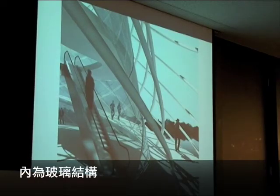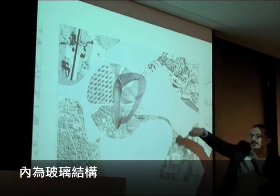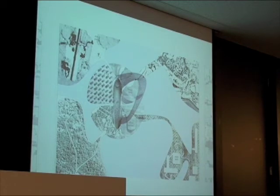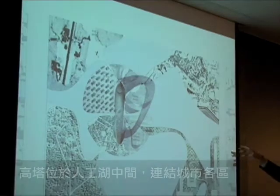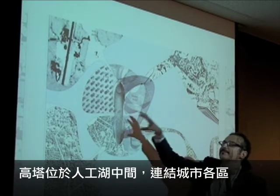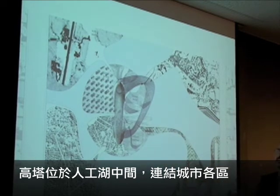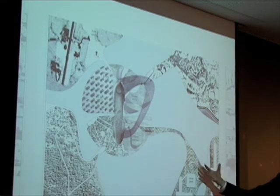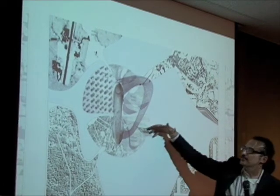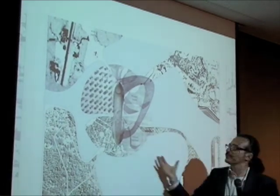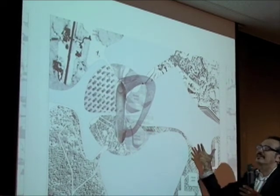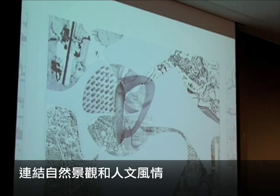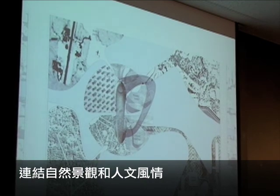We have glass inside and you can walk all around the building, so you have different sensations — you are completely inside the landscape. The position of the tower is in the middle of an artificial lake. The tower itself becomes a kind of link between one part of the city and the other. The water and all the landscape elements design the island.